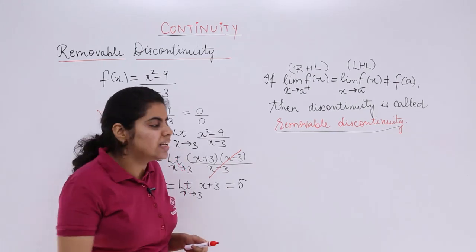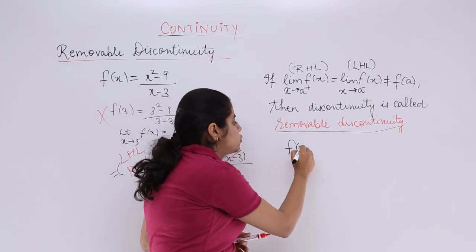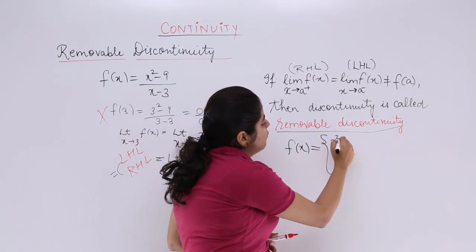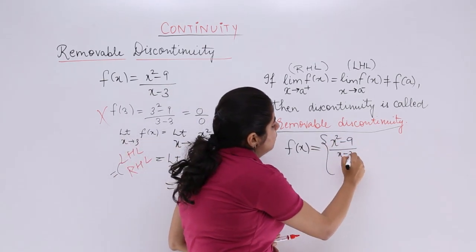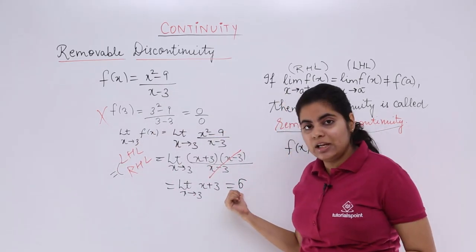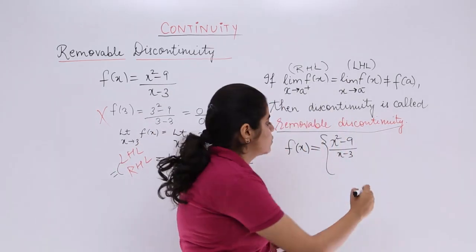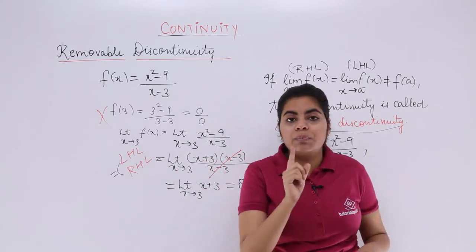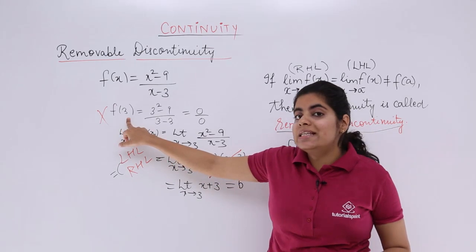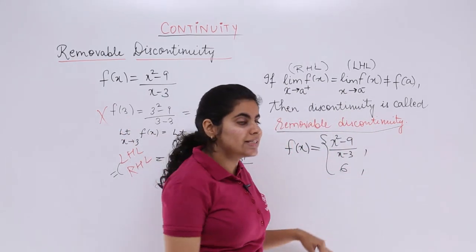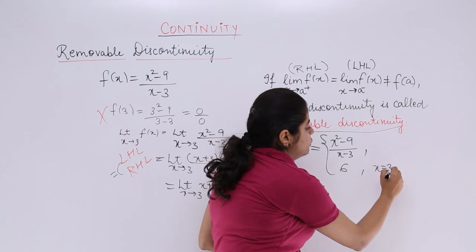You basically split the function, split the function such that you have one way is the same thing and the other way is what is the expected value. The expected value is 6 in case of limits. So you write 6 here. Where is the problem occurring? The problem is occurring when you put x exactly equal to 3. So you just write my value will be 6 when my value will be 3.